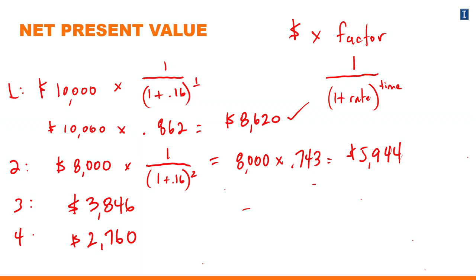All four of these inflows have now been translated into current day value, taking into account the time value of money. When I combine the value of all of these inflows, I'm summing them up: $8,620, $5,944, $3,846, and $2,760 amount to $21,170.